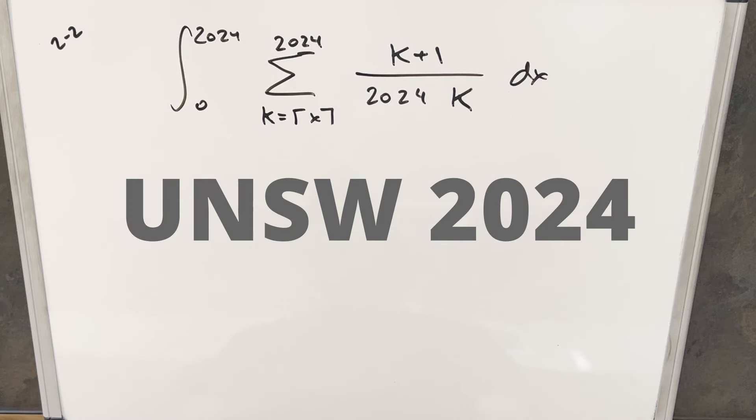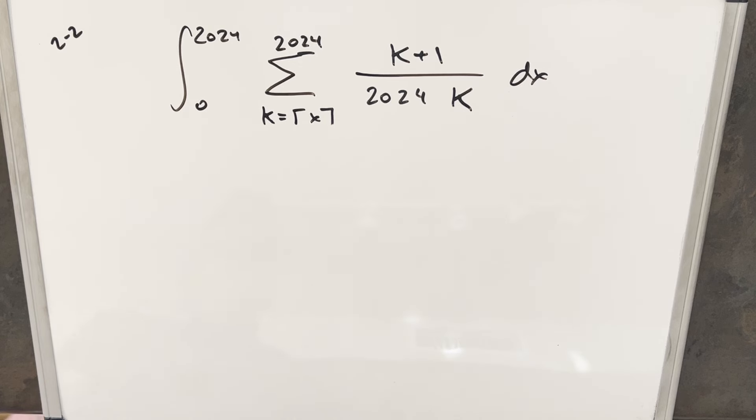Okay, we have another interesting integral here from the UNSW Integration B 2024, round two, problem two. We have the integral from zero to 2024 of the sum from k equals the ceiling of x to 2024 of k plus one over 2024 times k dx.